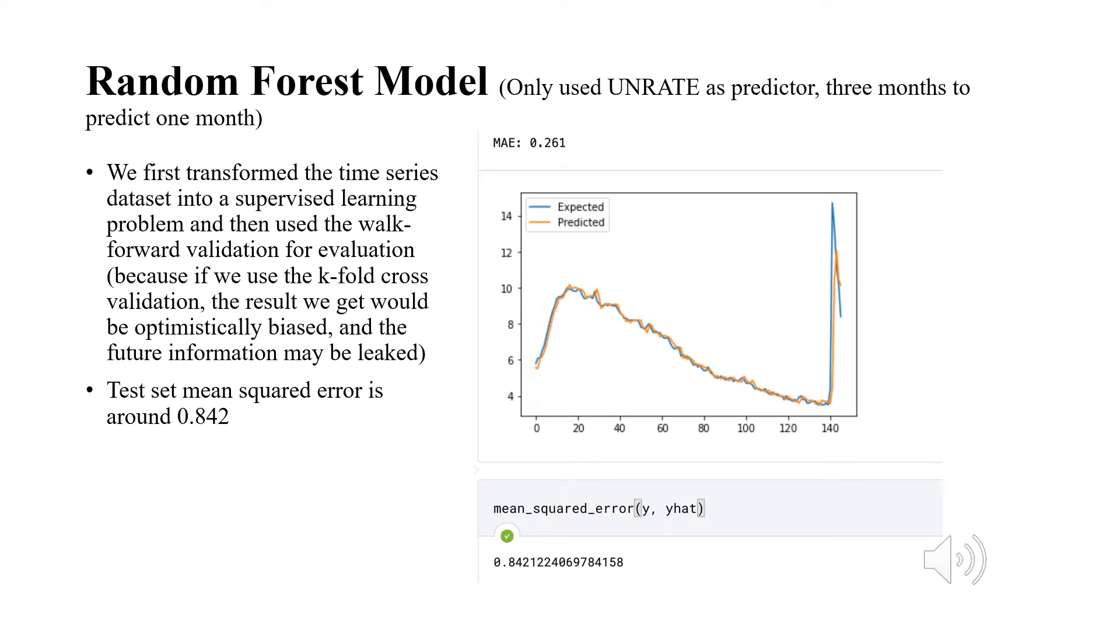The first model I built is a random forest model. In this model, I only used the unemployment rate as predictor, and used the unemployment rate in the last 3 months to predict the unemployment rate of the next month. Since we have a time series dataset, I first transformed the dataset into the supervised learning problem in order to fit the random forest model, and then used the walk-forward validation for evaluation. Because if we use the k-fold-cross validation, the estimate test accuracy would be optimistically biased. From the graph on the right side, we can see the result is not bad. The mean absolute error is 0.26, and the mean squared error is about 0.84, which is less than the mean squared error from the baseline model.